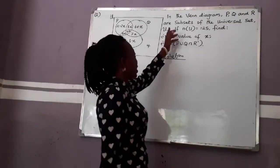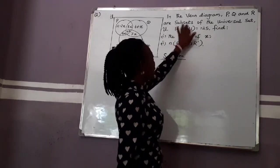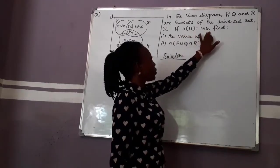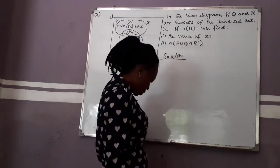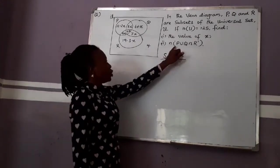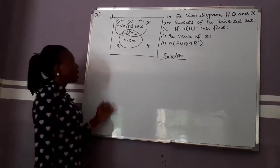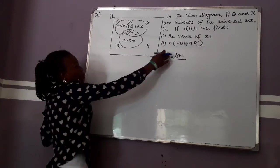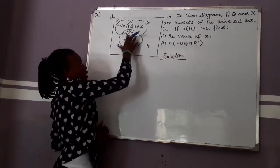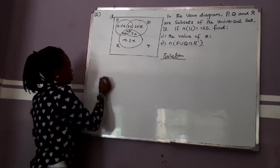Question 2. In the Venn diagram, P, Q, and R are subsets of the universal set U. If N of U equals 125, find the value of X. Part (i): to find the value of X, we have to sum everything in this set and equate it to the universal set 125. So we pick each of the sets: P has 16 minus 2X, plus 5X, plus 4X, plus 8X.